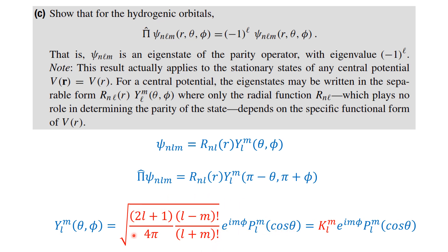We need not write out the normalization constant explicitly every time, because it depends only on l and m. So I am writing the entire square root part as K_lm, and keeping the remaining terms as they are: e^(i m phi) times P_l^m(cos theta).